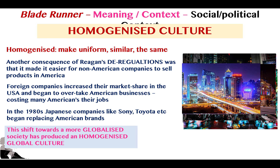This is seen in Blade Runner in several ways: there are many Asian, Japanese, and Chinese neon signs everywhere, and the city's denizens come from very different cultural and ethnic backgrounds — a very multicultural city, not just in terms of people but also in the mise-en-scène. This is a visual signifier of a homogenized culture caused by the rise of consumerism and capitalist culture, where the whole world is turning into one culture.